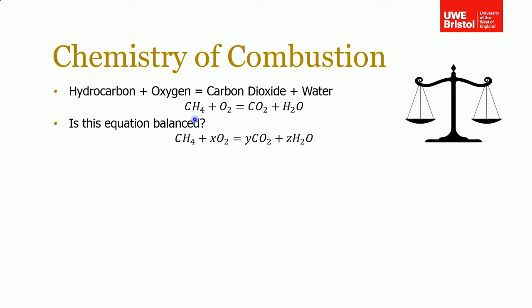I'm going to show you a method for doing that — if you follow these steps it should make it easier. The way we do it is we always assume we have one unit of our fuel. It's all about ratios, whether they're integers or fractions — it doesn't matter. So always start with one unit of your fuel, so we've got one CH4. We react that with some oxygen, but we don't know how much, so we're going to call it X. And if we assume complete combustion, we end up with some carbon dioxide — we don't know how much, so we'll say Y — and some water, we don't know how much, so we'll say Z.